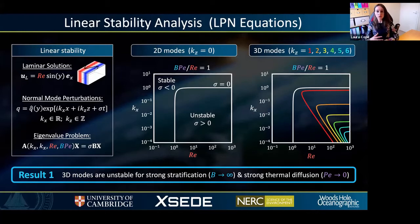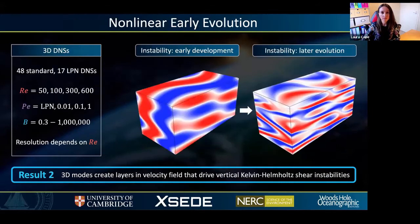Next we can consider the neutral stability curves for the 3D modes, where kz is greater than zero. These are shown on the right-hand side of the slide and plotted in color. Once again, instability occurs to the right and below these curves. However, the important point is that these modes are unstable for a finite value of BPe. This gives the first key result in the talk, which is that 3D modes are unstable in the limits of strong stratification and strong thermal diffusion, where BPe is finite. This is in contrast to the case of vertically sheared flows.